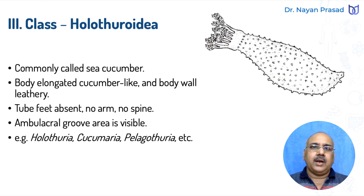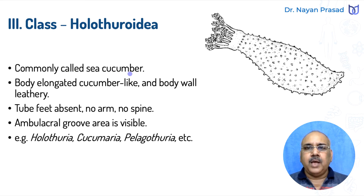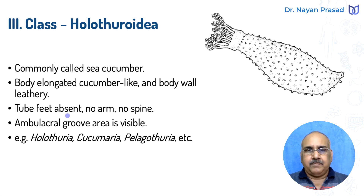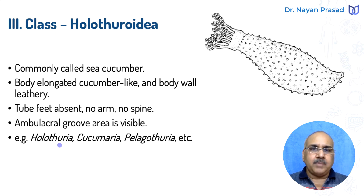Class Holothuroidea: members are commonly called sea cucumber. They have an elongated, cucumber-like body found in the sea. The body wall is leathery and thickened — unlike other groups that have spines on the skin. Tube feet are absent, and they have no arms or spines. The ambulacral groove area is visible. Common examples are Holothuria, Cucumberia, Pelagrothuria, etc.